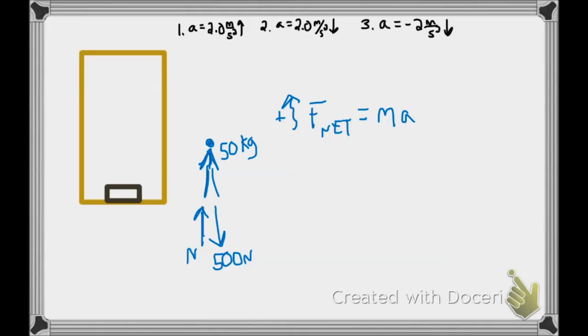F net equals ma. Let's say our frame is up is positive. We always get our net force from the diagram, so doing that we have N going up with our frame minus 500 equals the student's mass of 50 times the student's acceleration, zero in this case. So the normal force of the student is 500 Newtons before getting on the elevator.